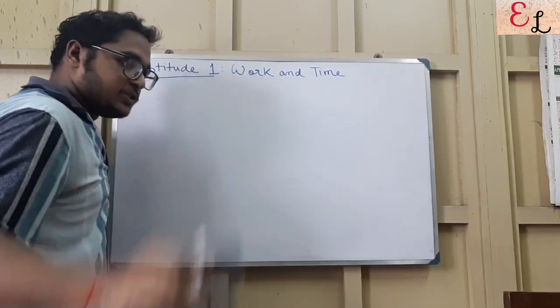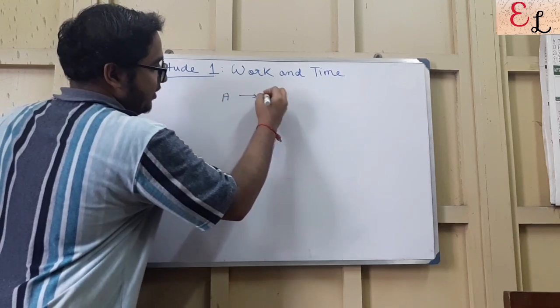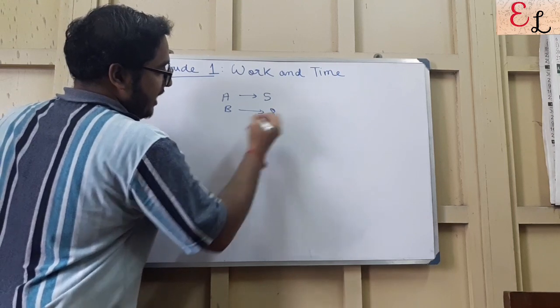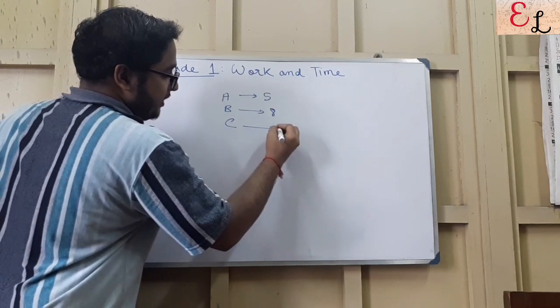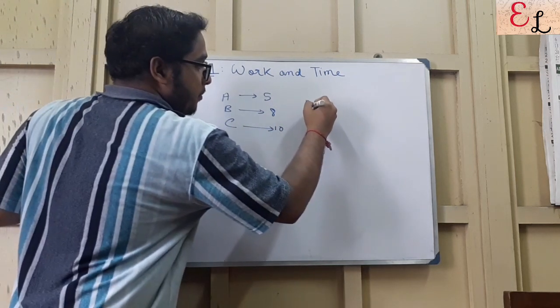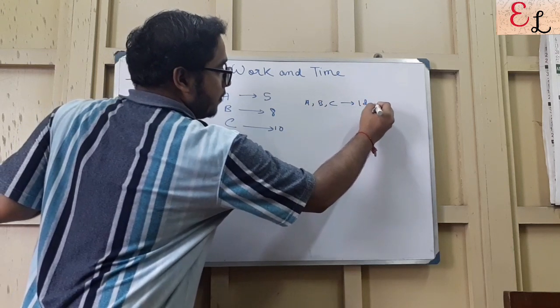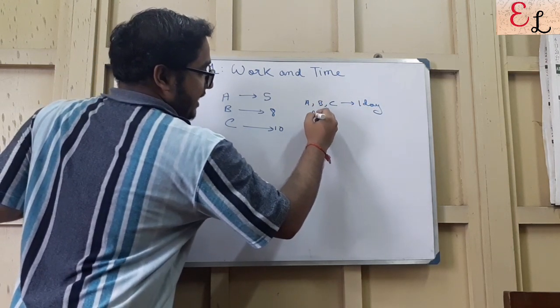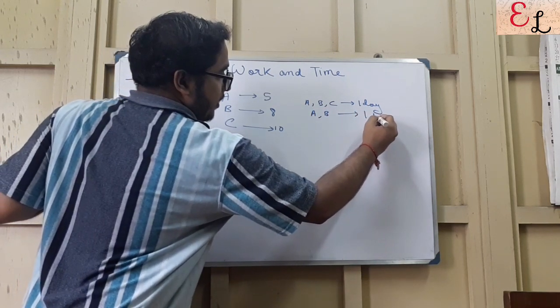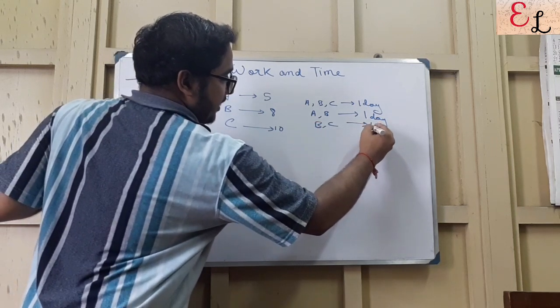Now let us solve a complex question. A does the work in 5 days, B does the work in 8 days, C does the work in 10 days. Now it is given that A, B, and C work together for 1 day, then A and B work together for 1 more day, and finally B and C work together for 1 day.